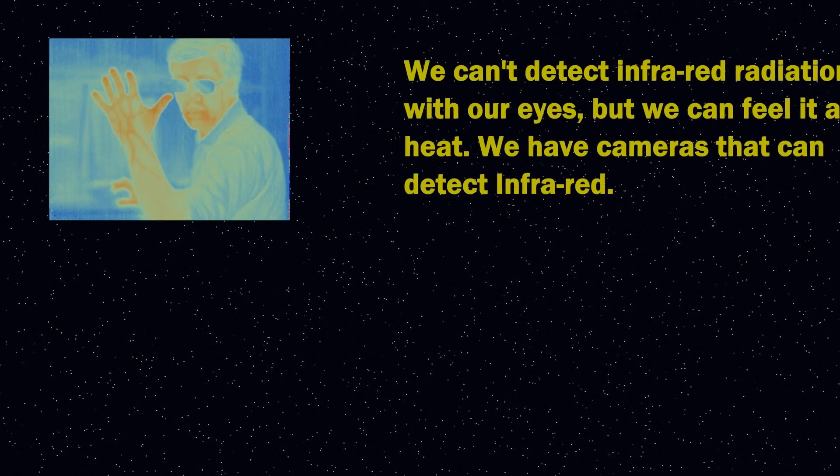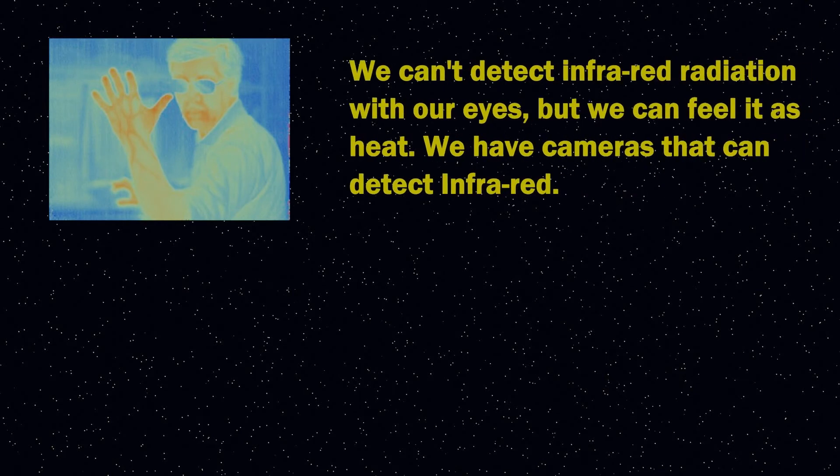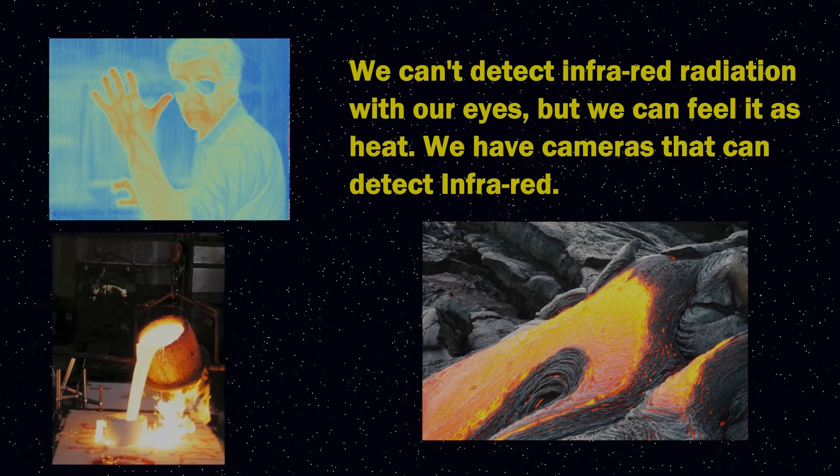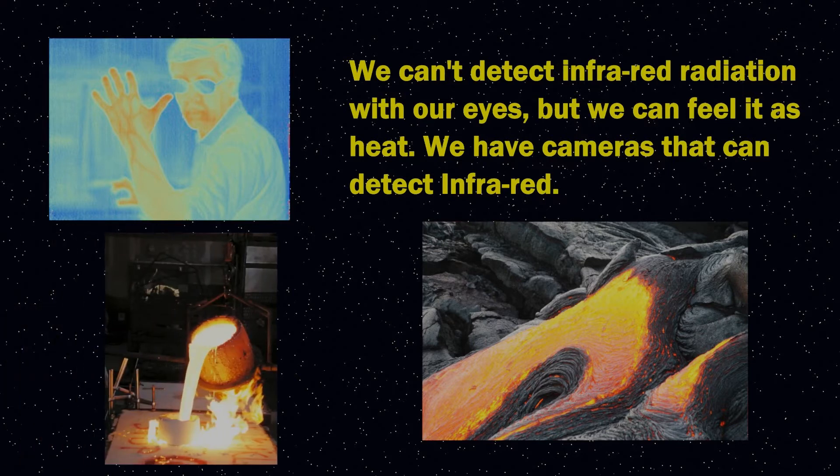All objects emit radiation. Cool objects emit this in the form of infrared radiation, which we can't see, but we can detect as heat. But as objects get hotter and hotter, they start to emit radiation that is visible to our eyes. For instance, if you were to heat up a piece of metal, eventually it would start to emit visible light when it became red-hot. And if it became even hotter, it would glow orange and then yellow, and so on.